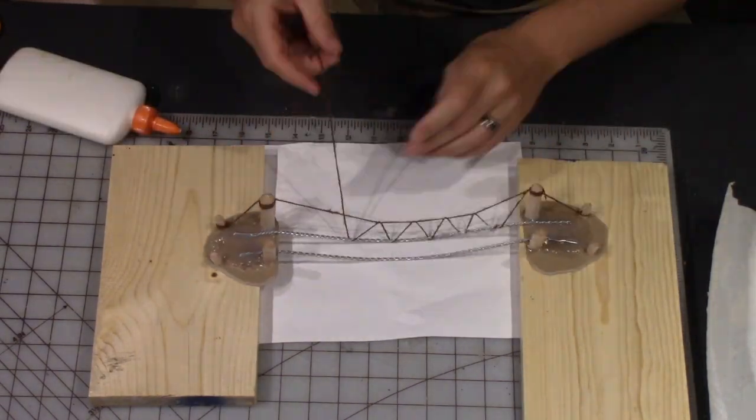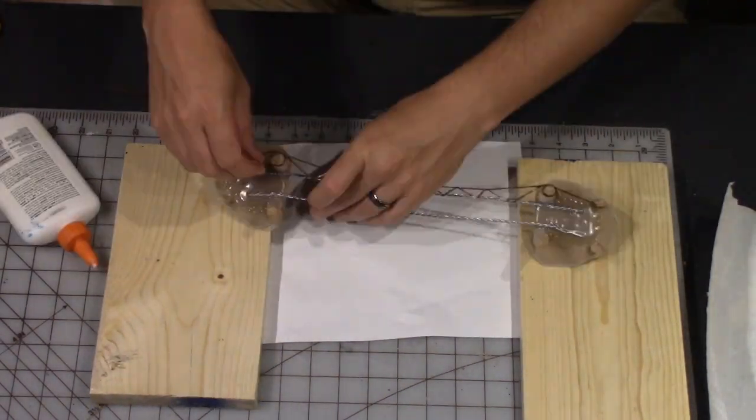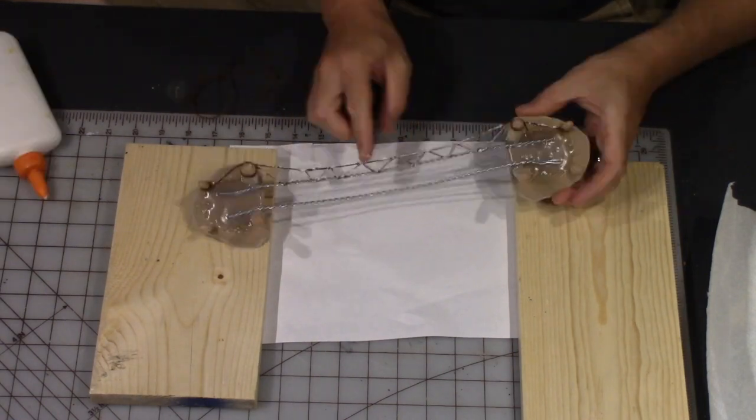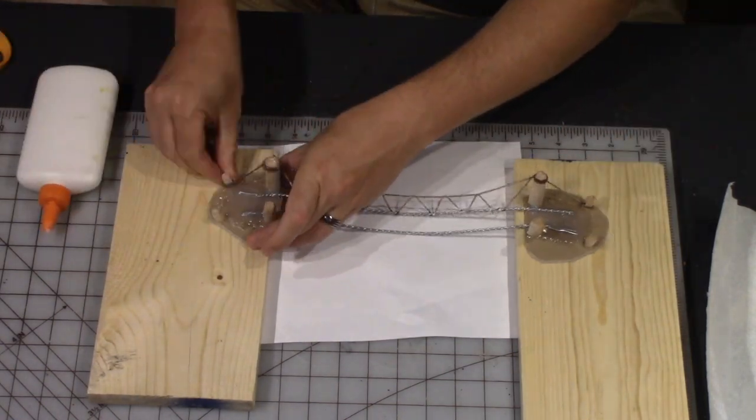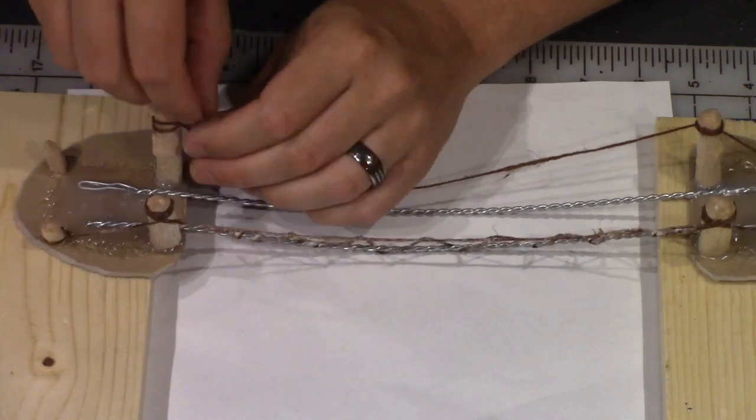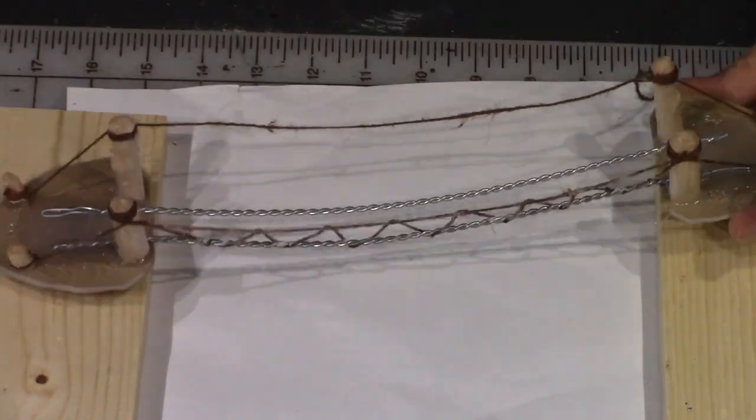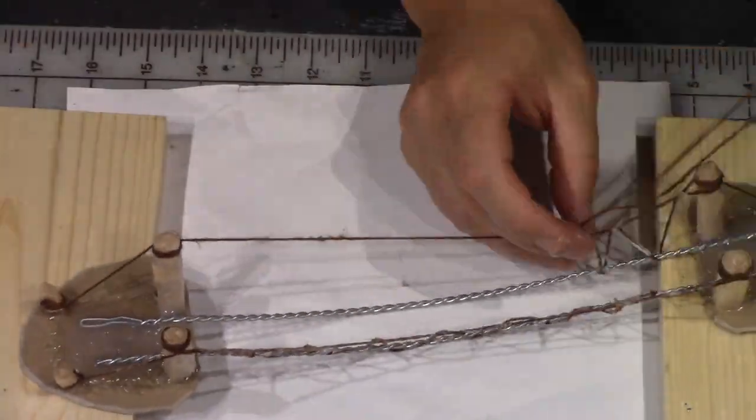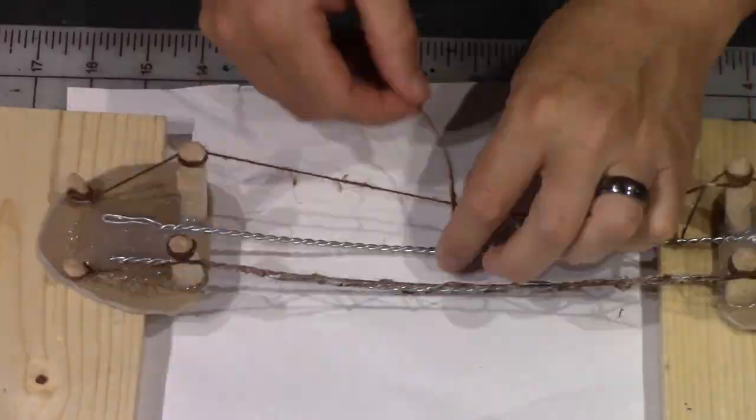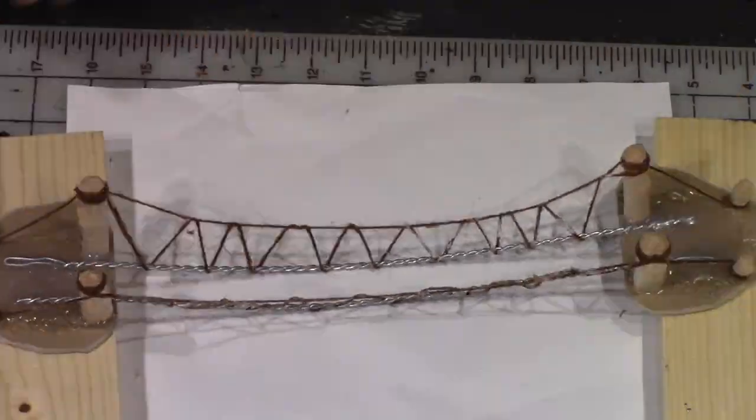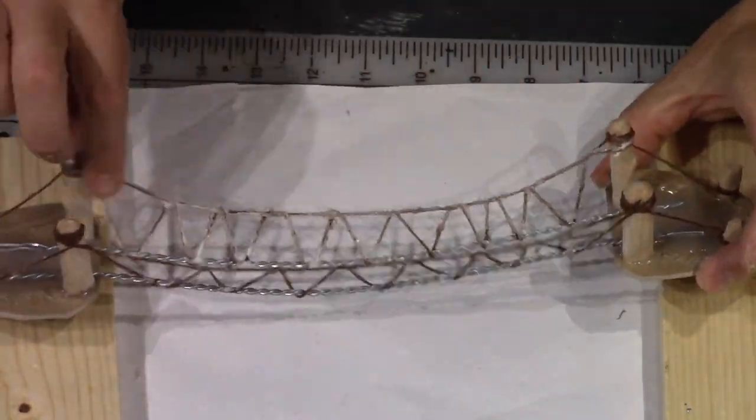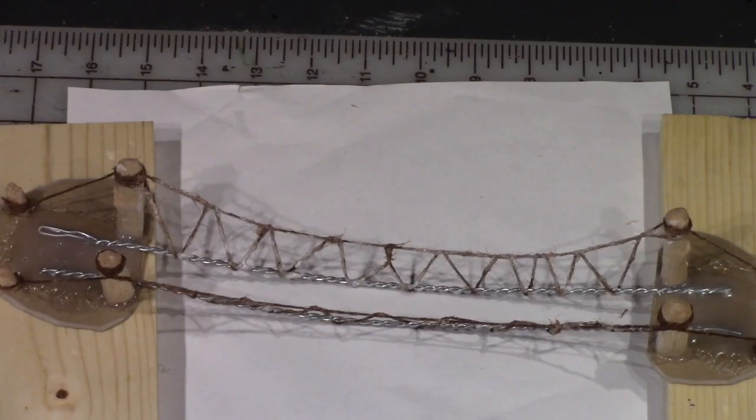Using glue, I'm kind of wrapping it around the poles and the wire in kind of a zigzag fashion, really coating the whole thing in the white glue. The white glue will make the string very rigid and firm when it dries. Just coating the whole thing in glue with that zigzag pattern.